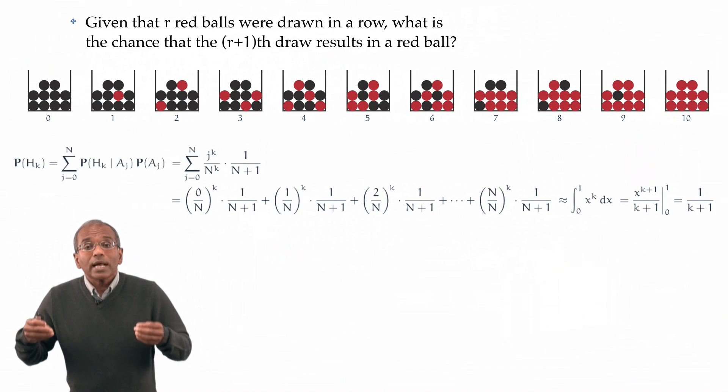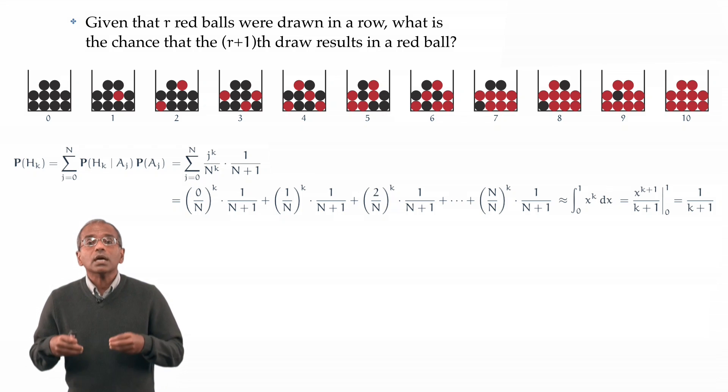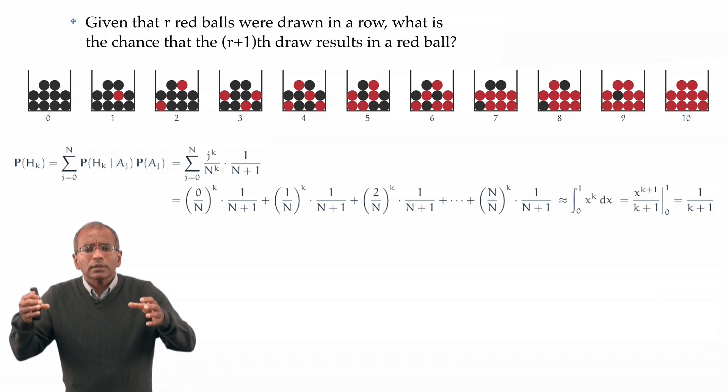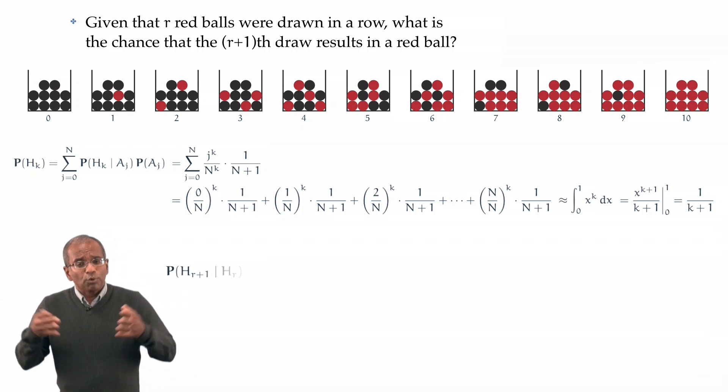We are now equipped to answer the following question. Given that r red balls in a row have been drawn, what is the chance that the next draw will result in a red ball? From a mathematical perspective, this is equivalent to asking what is the conditional probability of the occurrence of the event Hr plus 1 given that the event Hr has occurred. We promptly just write down the definition of conditional probability, and we get a ratio of probabilities.